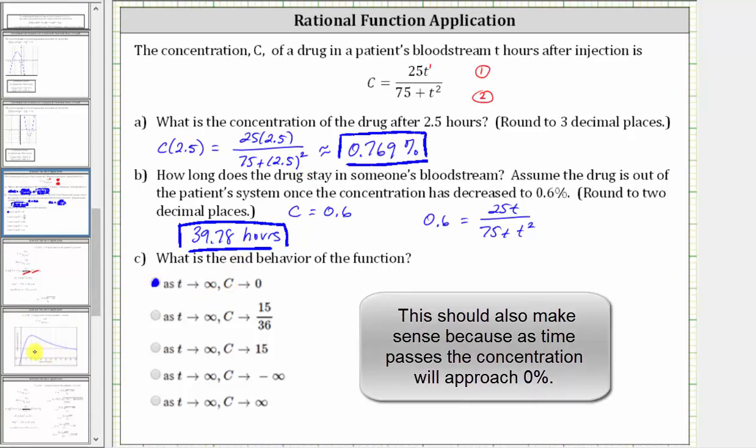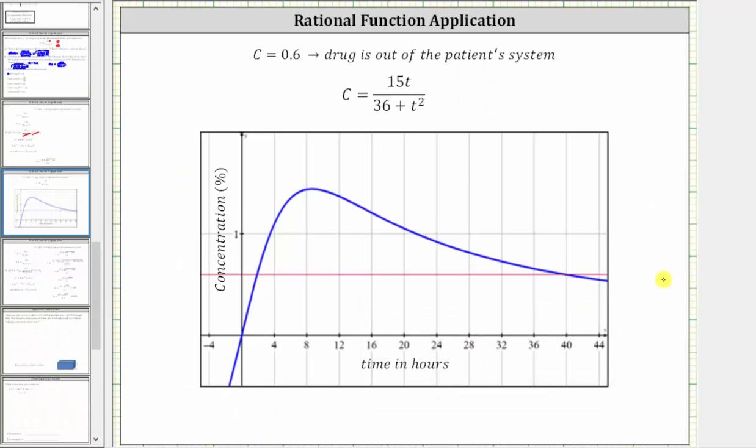And if we go back to the graph, the graph does verify that as T approaches infinity, or as we move to the right along the graph, the concentration does approach a concentration of zero percent. I hope you found this helpful.